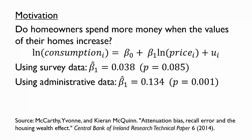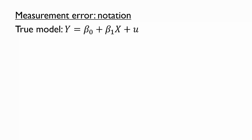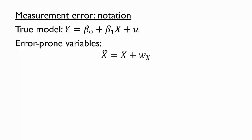Let's introduce some notation so that we can discuss measurement error clearly. We'd like to estimate a true model where y is the dependent variable and x is the independent variable. But we can't estimate this because our dataset contains only error-prone variables, not the true x and y. The error-prone independent variable is called x tilde, which is x plus some random error w. That w is the measurement error.